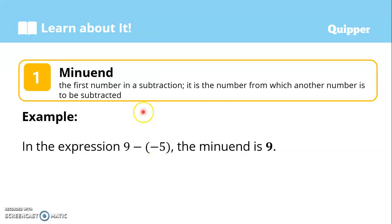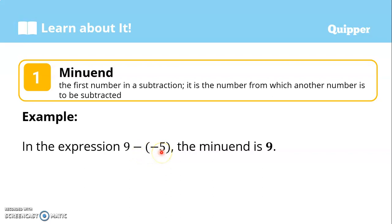First, let's define the minuend. The minuend is the first number in the subtraction. It is the number from which another number is to be subtracted. For example, in the expression 9 minus negative 5, the minuend is 9. So this first number is what we call the minuend.